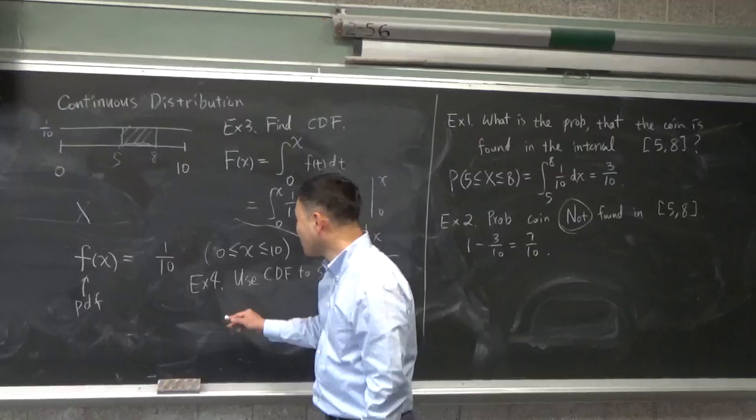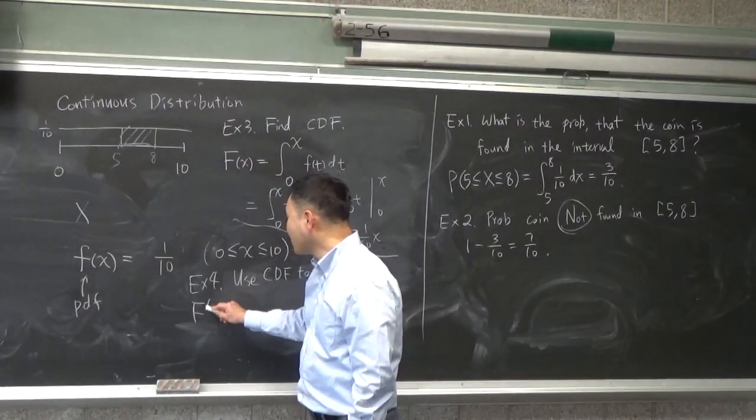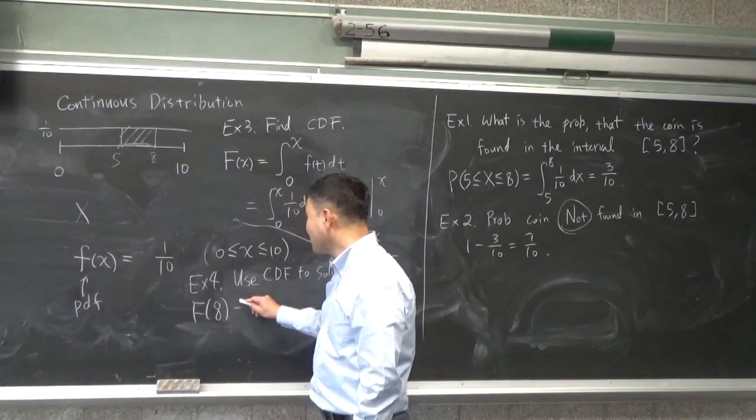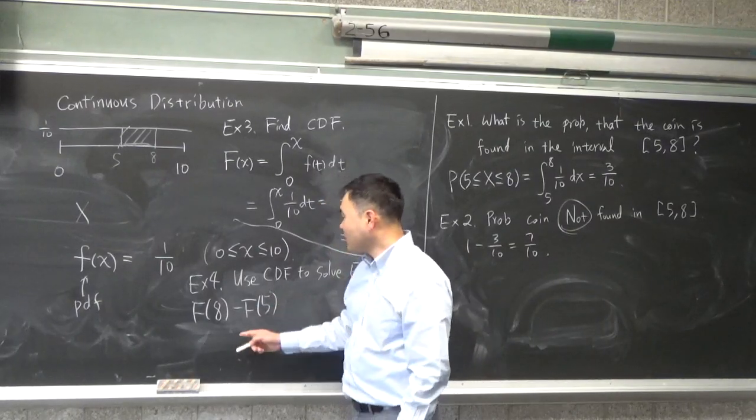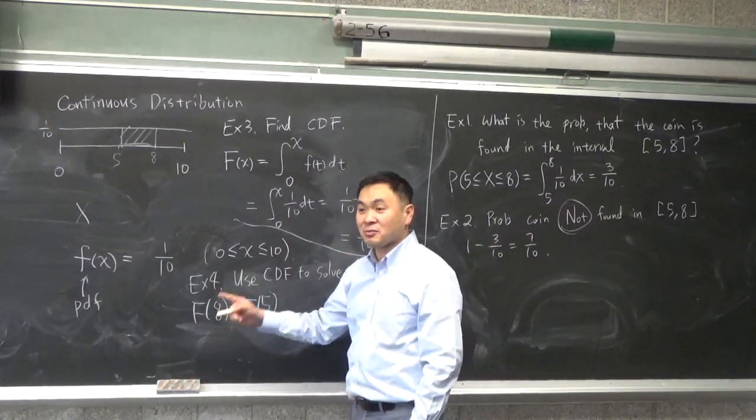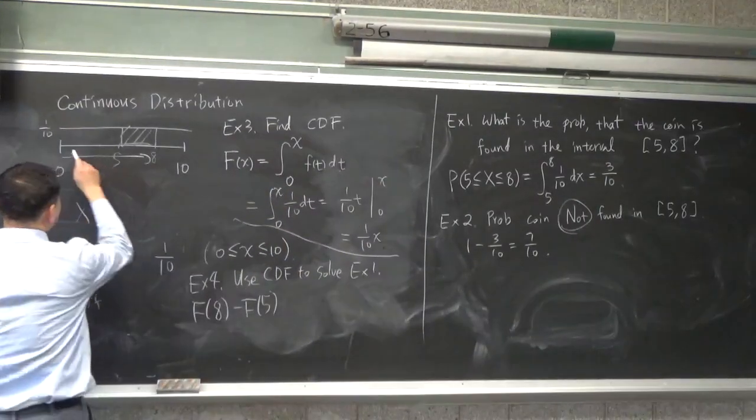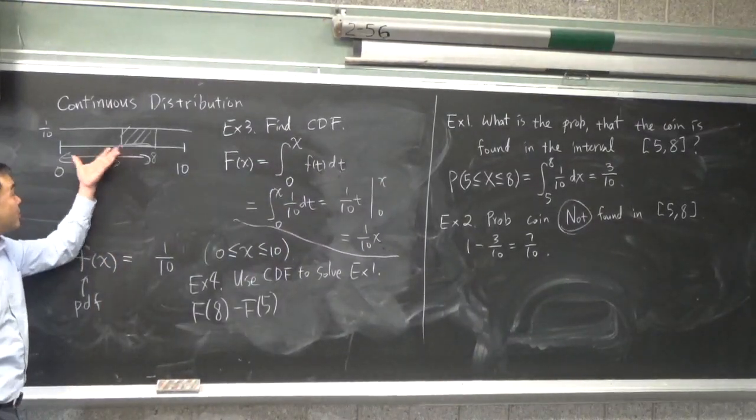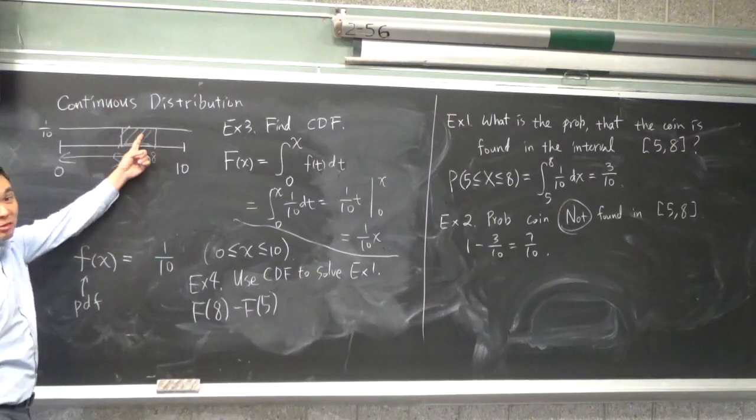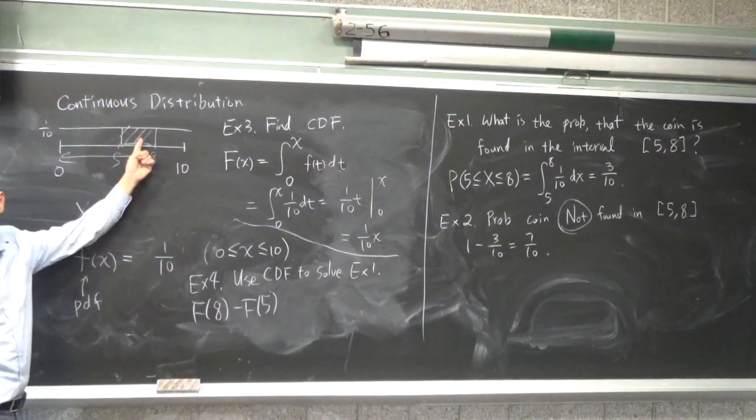That's exactly what you do. So, what you do is you do F(8) minus F(5) because this calculates the probability from 0 to 8. So, from here to there, right? And then, from here, you subtract this much and what are you left with? You're left with this much, right?